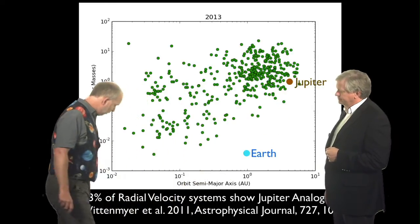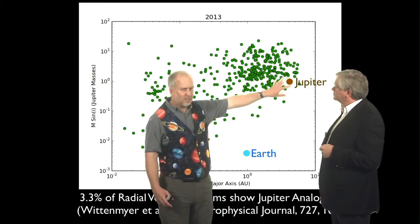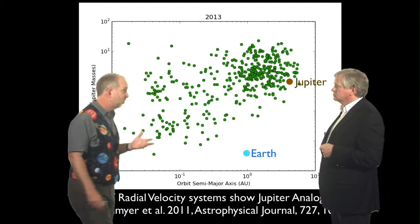And a recent paper by Robert Wittenmyer concluded that they are seeing vaguely Jupiter-like things in about 3.3% of the stars they study.